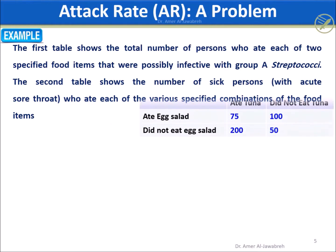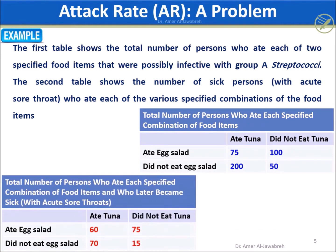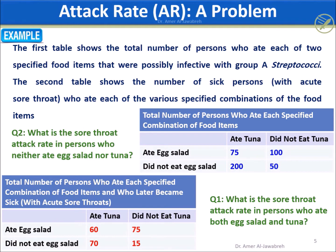In this foodborne outbreak problem, we have two tables. The upper table gives us the total persons who ate tuna and salad regardless of infection, while the second table shows those who are infected with symptoms. Question 1: What is the AR in those who ate egg salad and tuna? Question 2: What is the AR in those who did not eat any of the two foods?